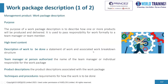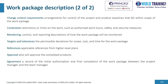The third management product is the work package description. Its purpose is to describe how one or more products will be produced and delivered. It is used to pass responsibility for work formally to the team manager or team member. Contents include a description of work to be done — a statement of work and associated work breakdown structure — the name of the team manager or individual responsible, product descriptions associated with the work package, relevant techniques and procedures for how the work is to be done, and change control requirements covering arrangements for control of the project and project baselines that fall within scope of the work package.